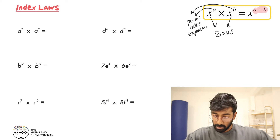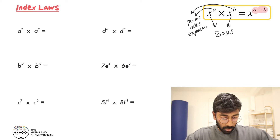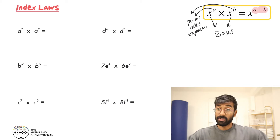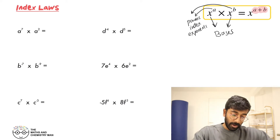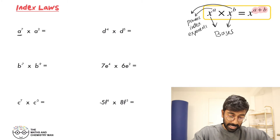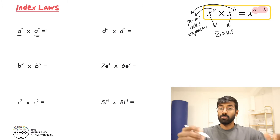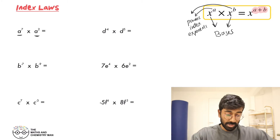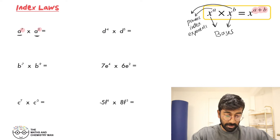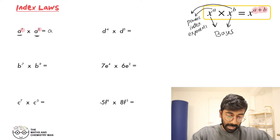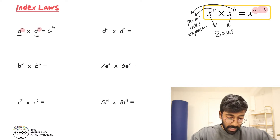So if you have a look at the first one, we've got A to the power of 7 times A to the power of 2. All we have to do is just add the powers together: 7 add 2, so A to the power of 9. Next one, we've got B to the power of minus 7 times B to the power of minus 9.